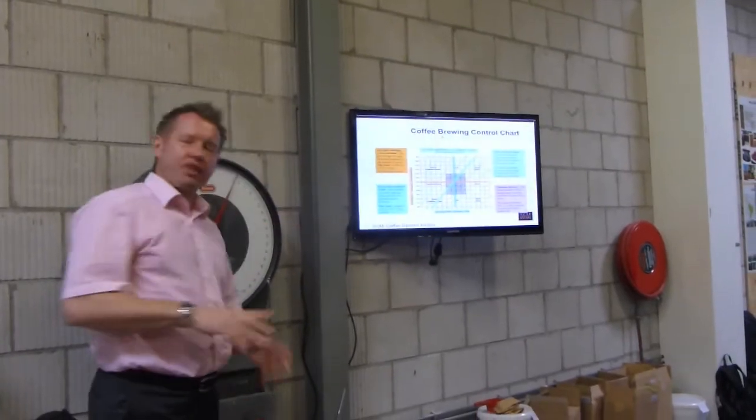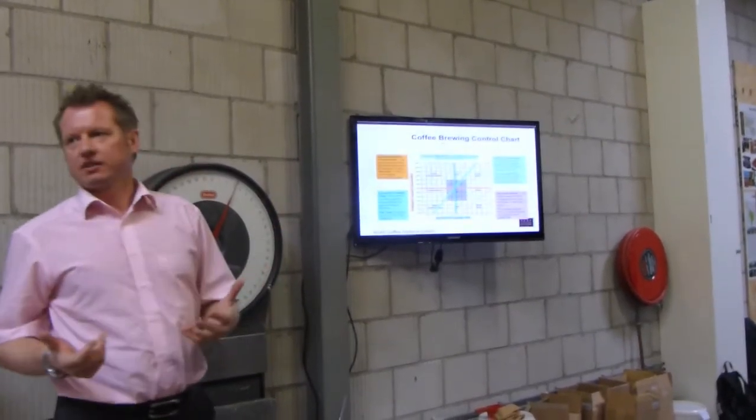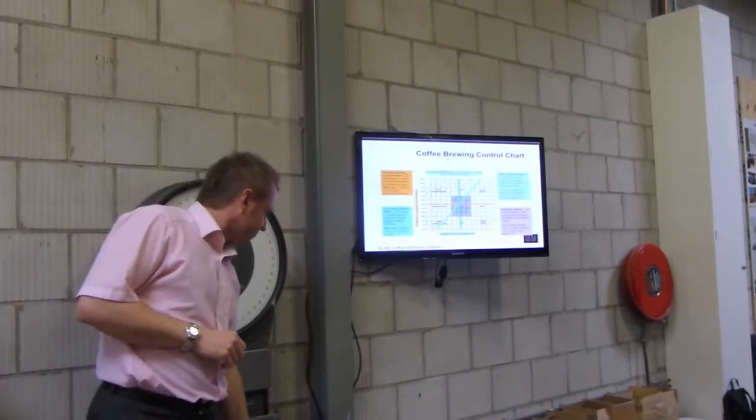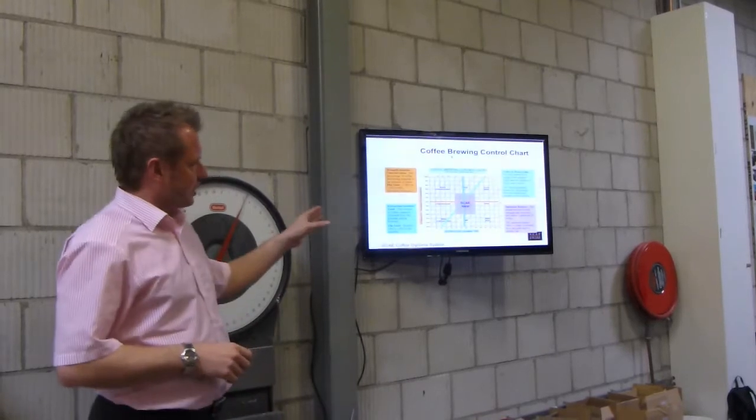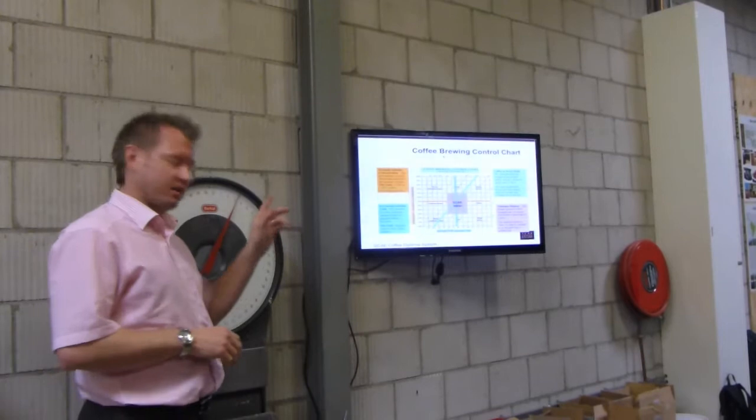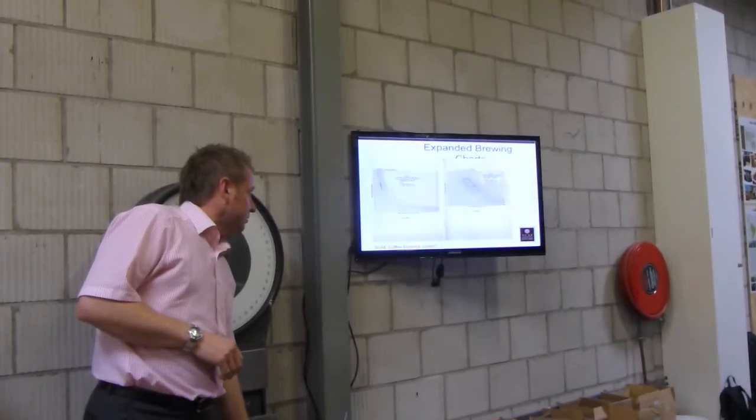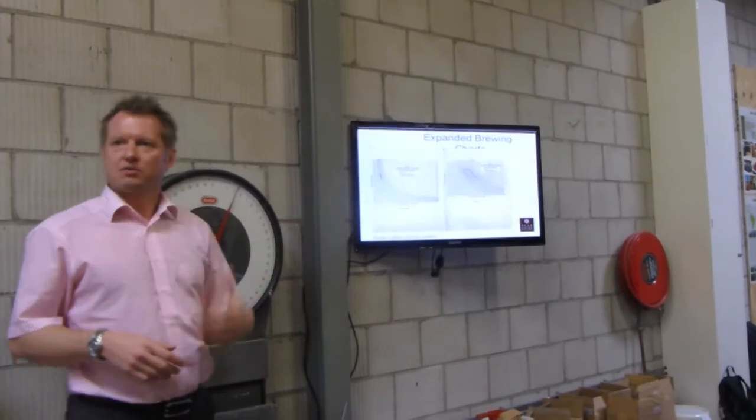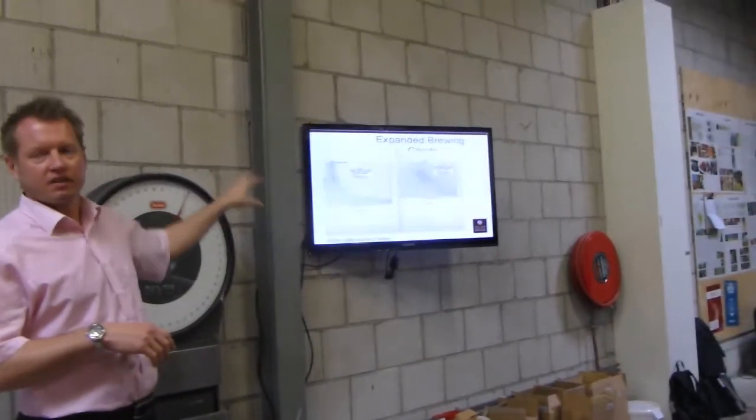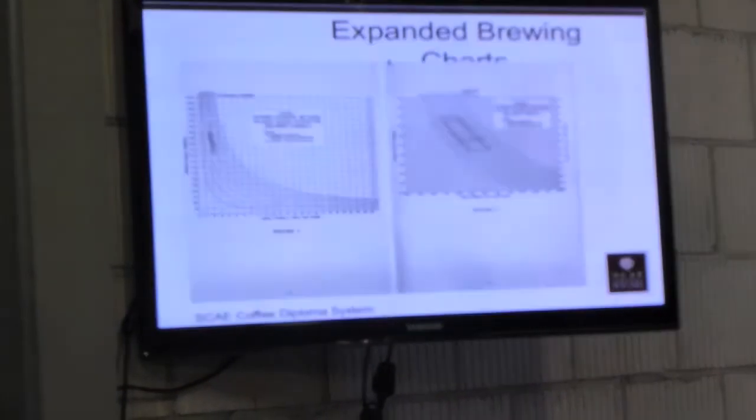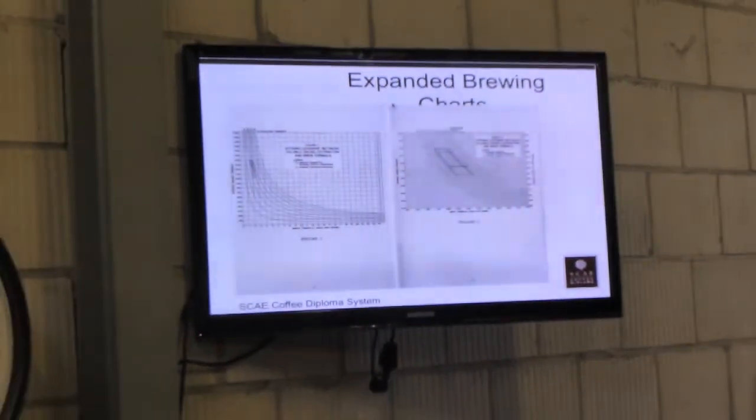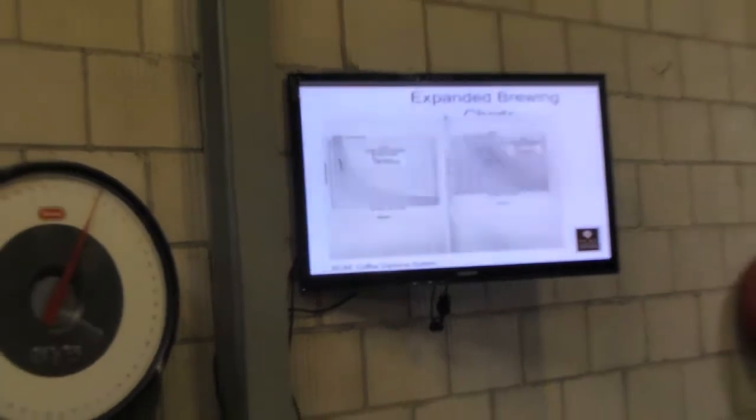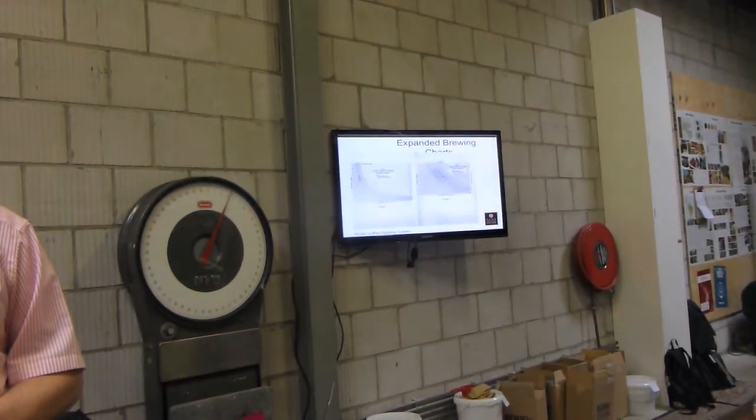So when you get within the box you should have an optimal balance of strength and extraction. Everybody likes different taste profiles but at least you can shoot up and down the lines to get different extraction. SCA has a box. The box has slightly changed from that. Now it's got no top on it so you can go as strong as you would like. There's another slide in a minute with that on. So if the box has no top, there is an over-extraction if possible and it's still right for the SCA. Yeah, you can go as strong as you want as long as you're 18-22% extraction.